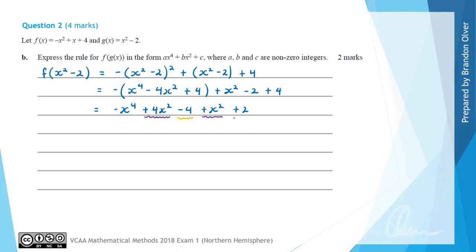So we can find that f(g(x)), what we were asked to find, is equal to negative x to the power of 4, then we're going to have plus 5x squared, and the last term will be subtract 2. So that is the answer to part b of this question.